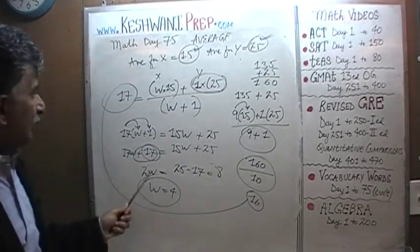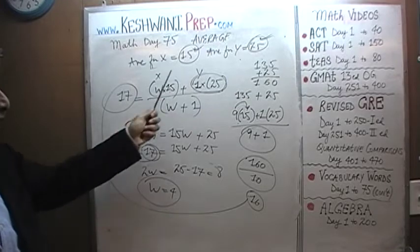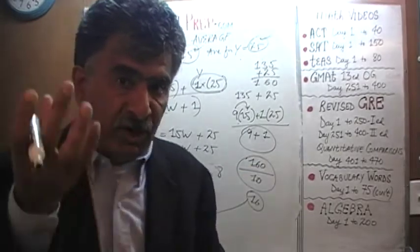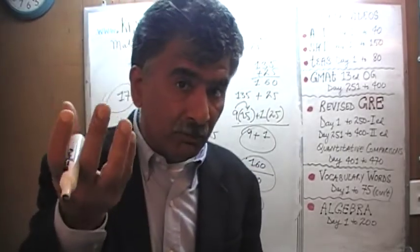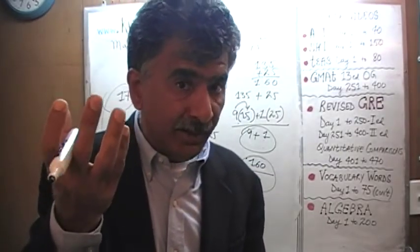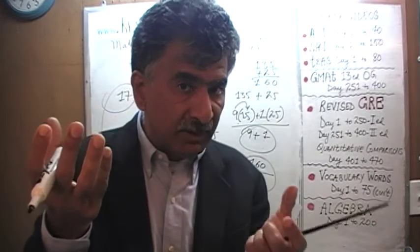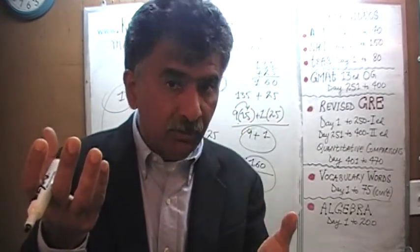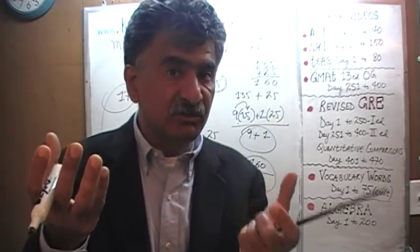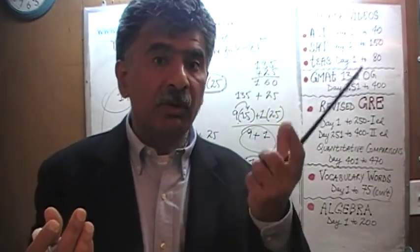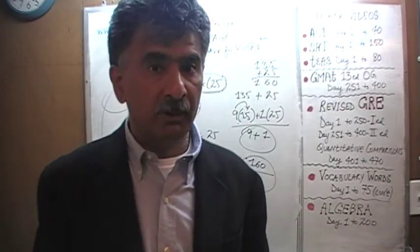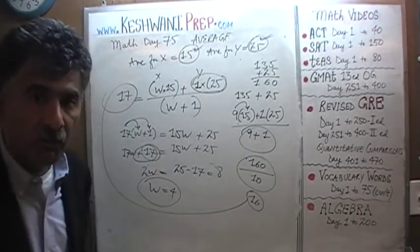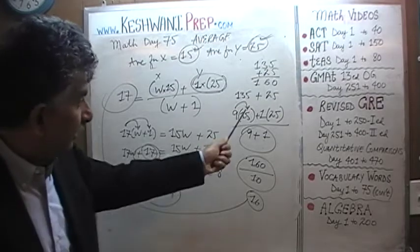Now that the overall average is $17,000 — not as close to $15,000 as before — the overall average is a little higher, which means we have more people in department Y and fewer in department X. The people in department X are still pulling the average down, but not as much as before. Before, there were 9 of them for every 1 person in department Y; now, for every 1 person in department Y, we have 4 people in department X. Let's verify it.